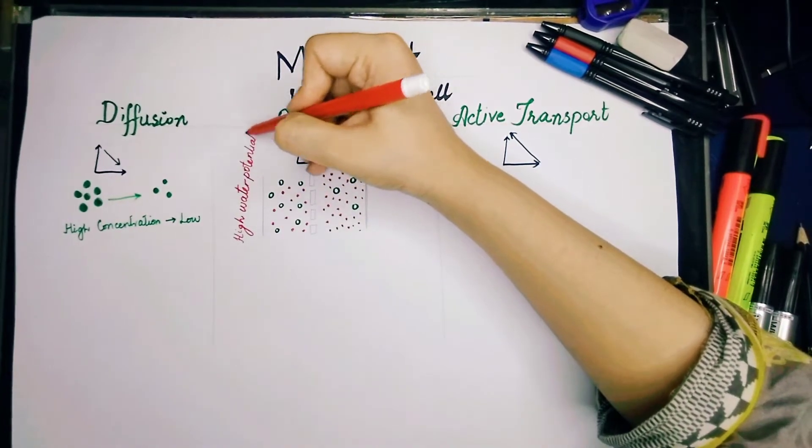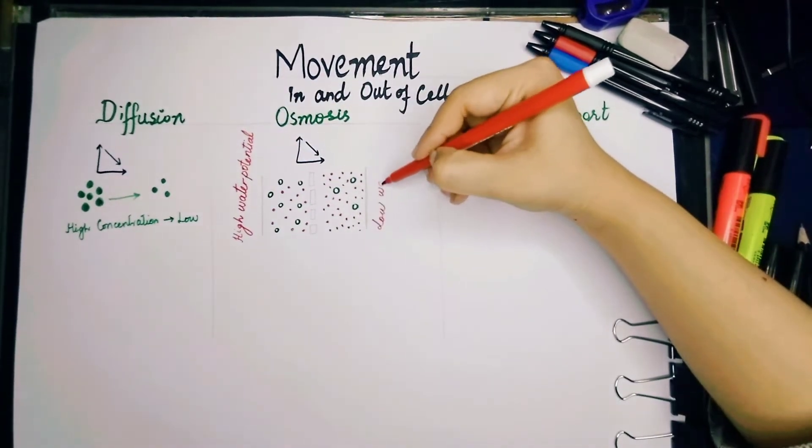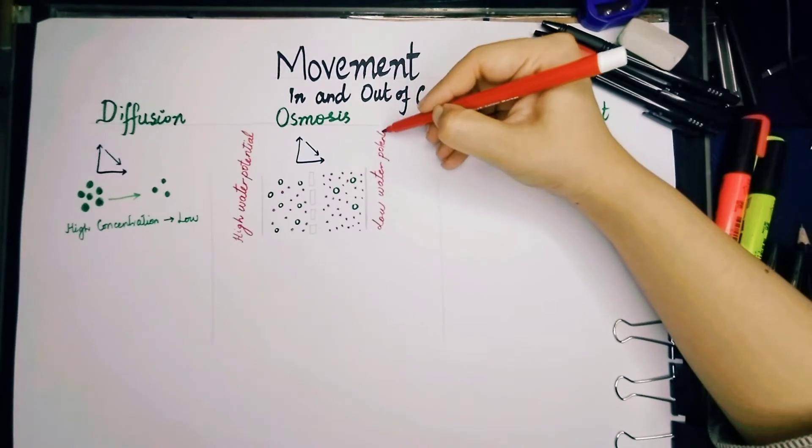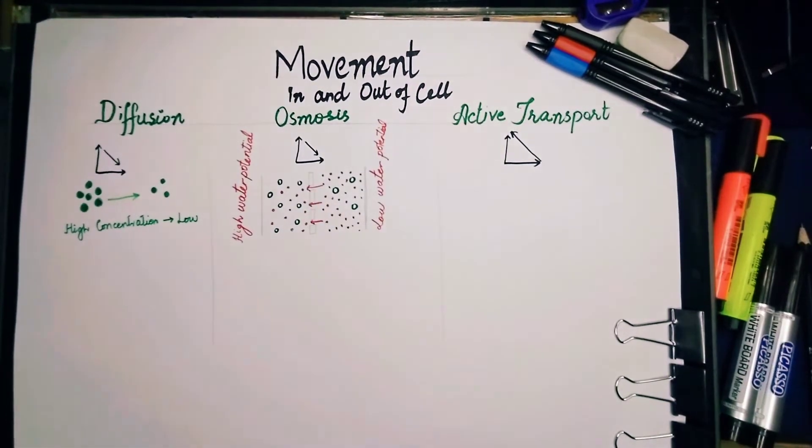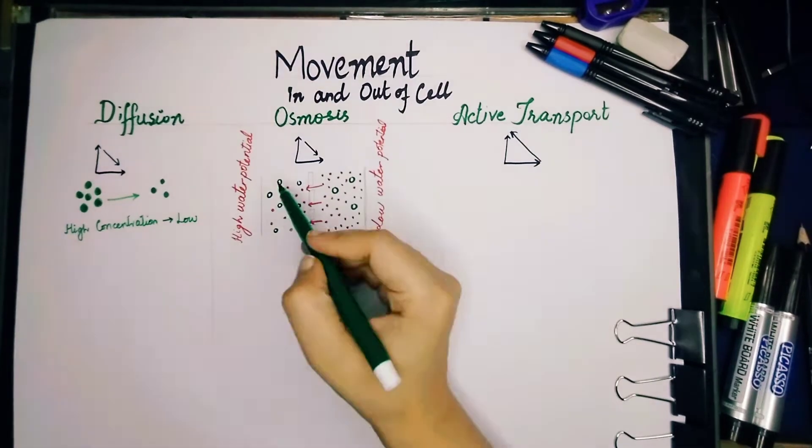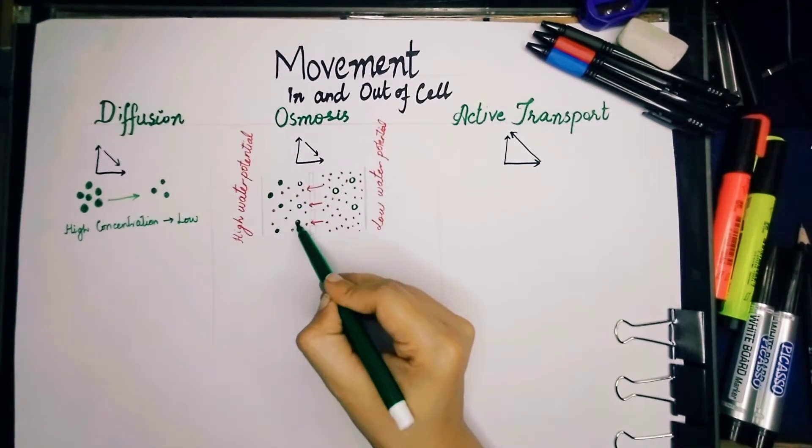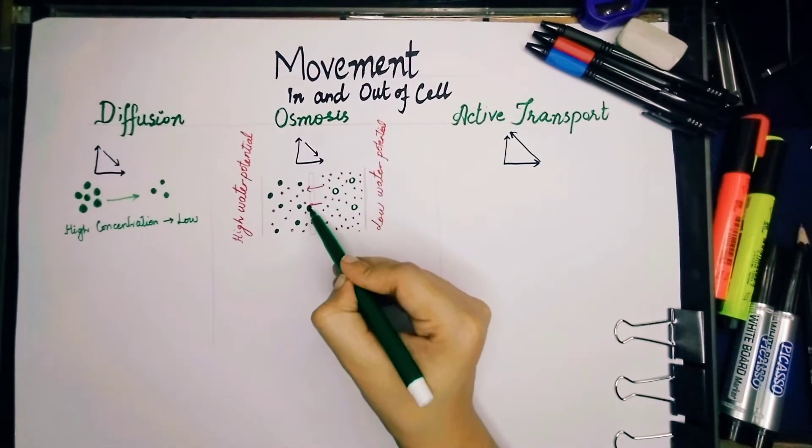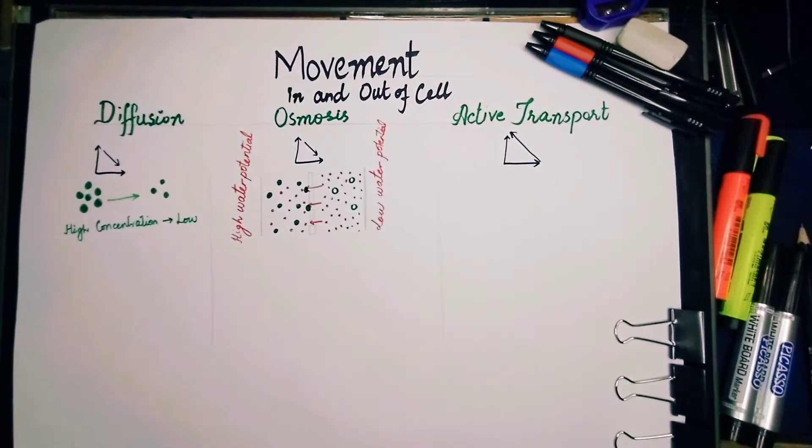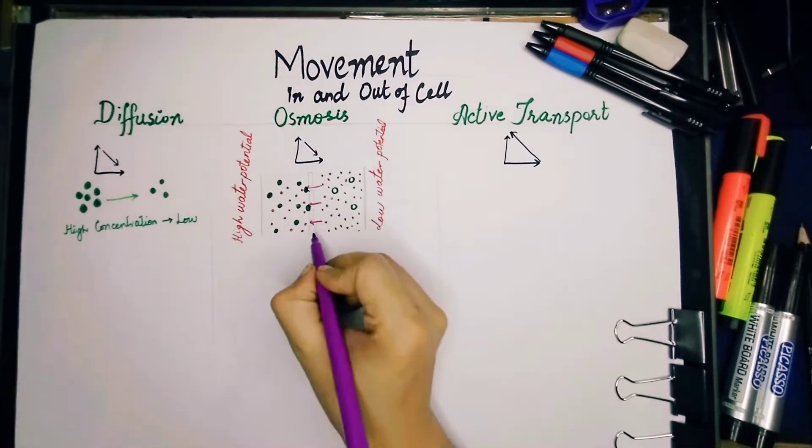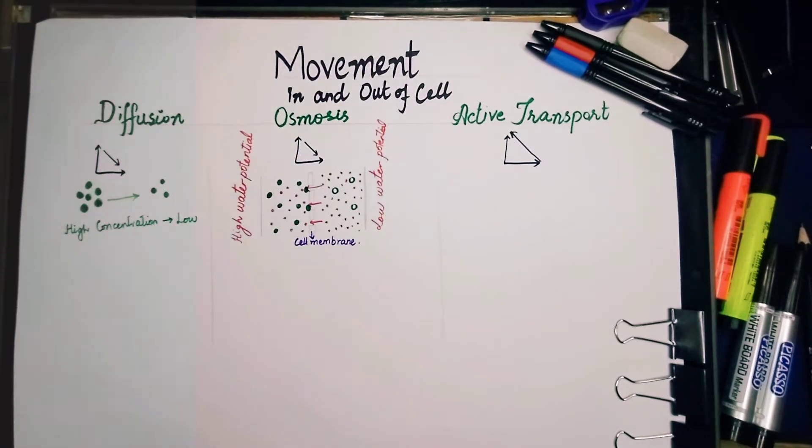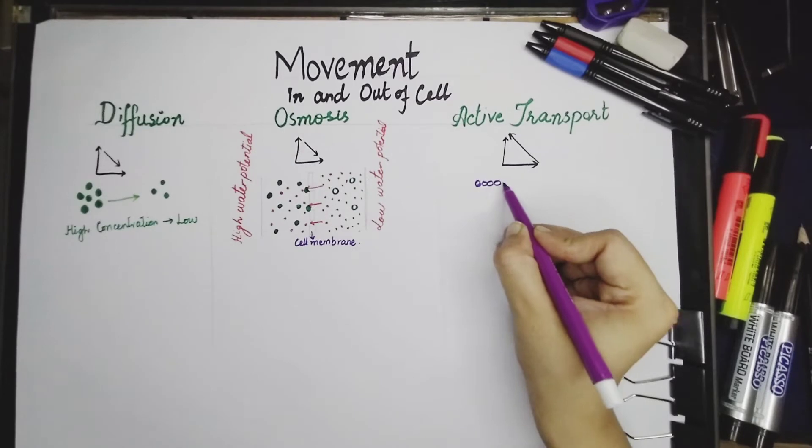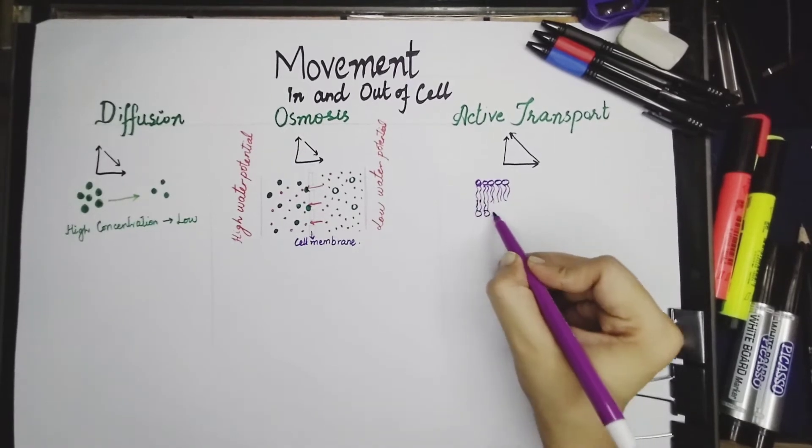So for water, we use water potential. For the other molecules, we use concentration. You need to be very careful in using these terms. Here, the water will move from the higher water potential to lower water potential, whereas the molecules, which you can see here, they are larger in size, so they cannot cross the cell membrane. If we are having this cell membrane in our body or in our cells, then osmosis takes place.